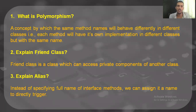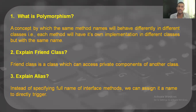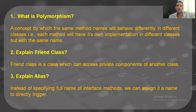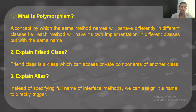What is polymorphism? Polymorphism is basically a concept where the same method would have different names and behave differently in different classes. It's like the split personality of a human being — the same person behaves one way here, and when he goes to another place, he's a different person. So each method will have its own implementation in different classes, but with the same name.